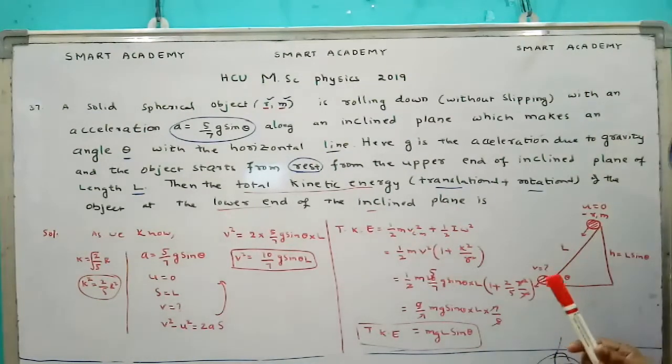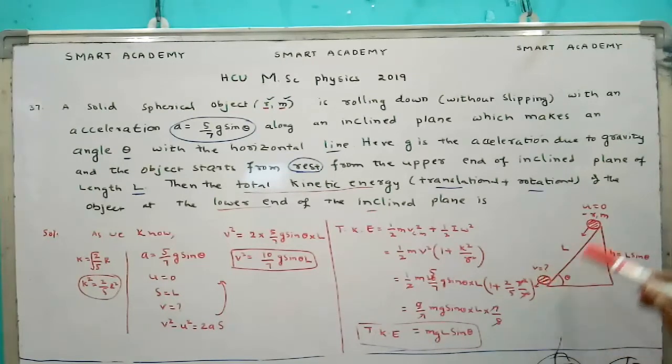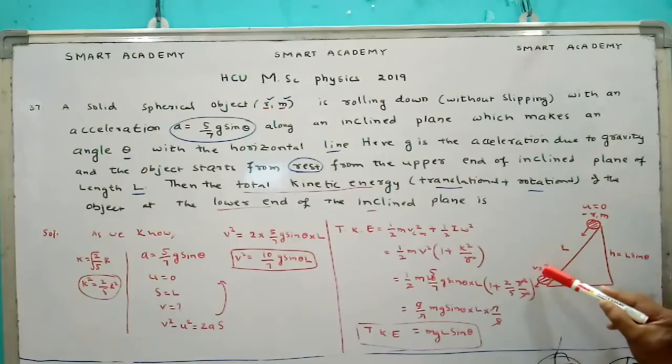So what is there actually? This is the inclined plane. A spherical object is going down from top of the inclined plane to lower end of the inclined plane with initial velocity is 0. The radius of the spherical is small r and mass is small m. The length of the inclined plane is capital L.